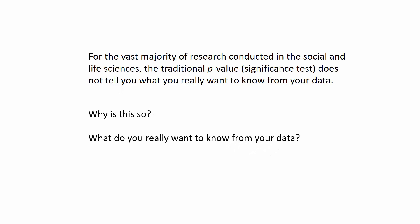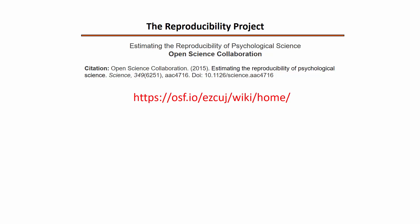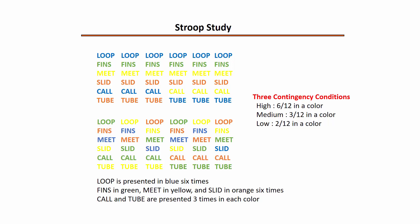Why is this so, and what do you really want to know from your data? To answer these questions, let's examine a study from the Reproducibility Project. The authors of this study used a variation of the Stroop task to investigate how individuals would learn associations between particular word-color pairs. There were 432 randomized trials of word-color pairs, like the ones shown on the screen.